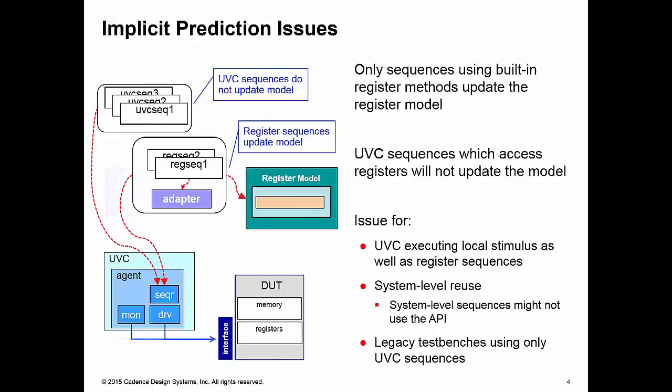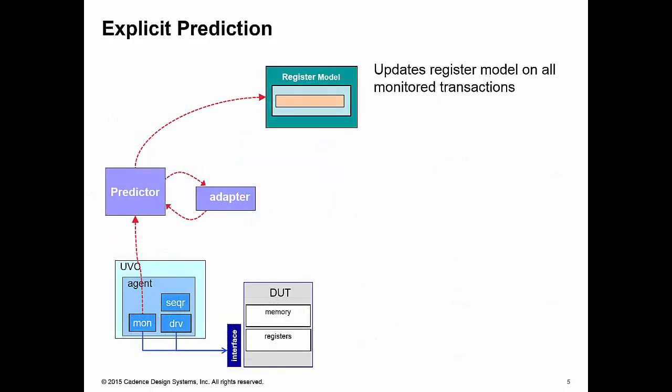So an alternative is to use explicit prediction. The idea of explicit prediction is it will update the register model regardless of where a given transaction came from, whether it was generated from an API register sequence or from a UVC register sequence. To do this, we need a predictor component and we need the register UVC adapter.